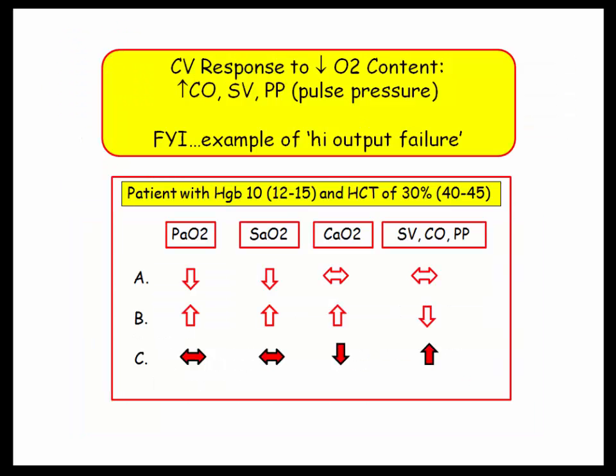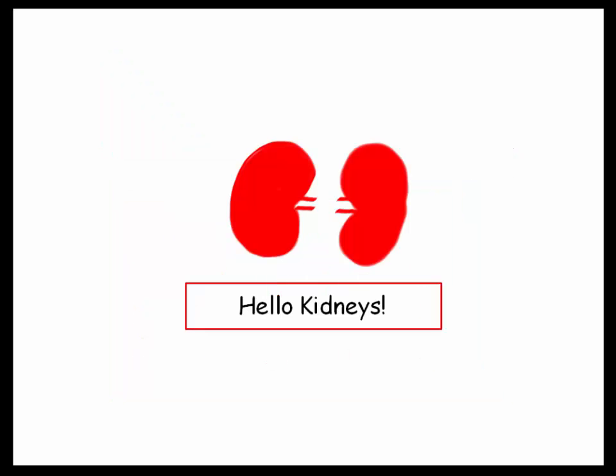Here we are again with the anemic patient — the full picture. We've included the cardiovascular response to anemia, or better stated, the cardiovascular response to decreased oxygen content. Once you learn this material, there are only a finite number of ways they can test you on it.